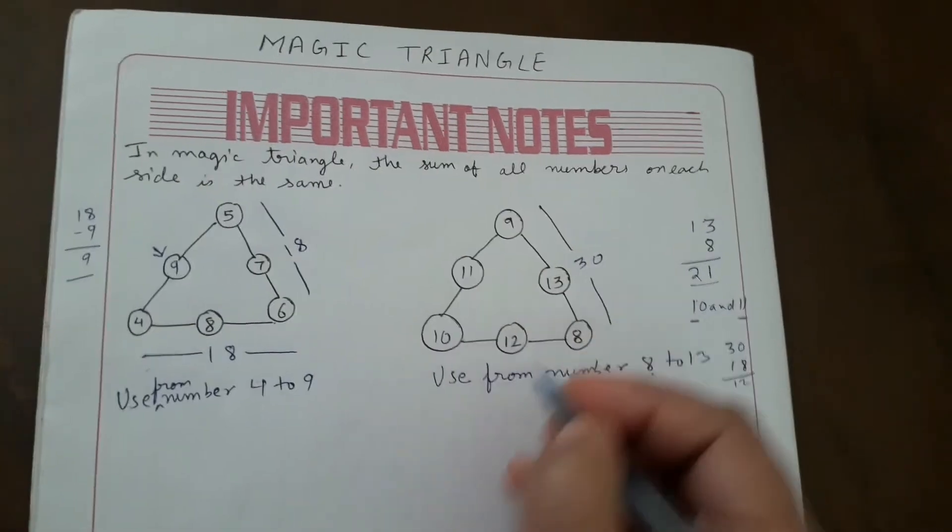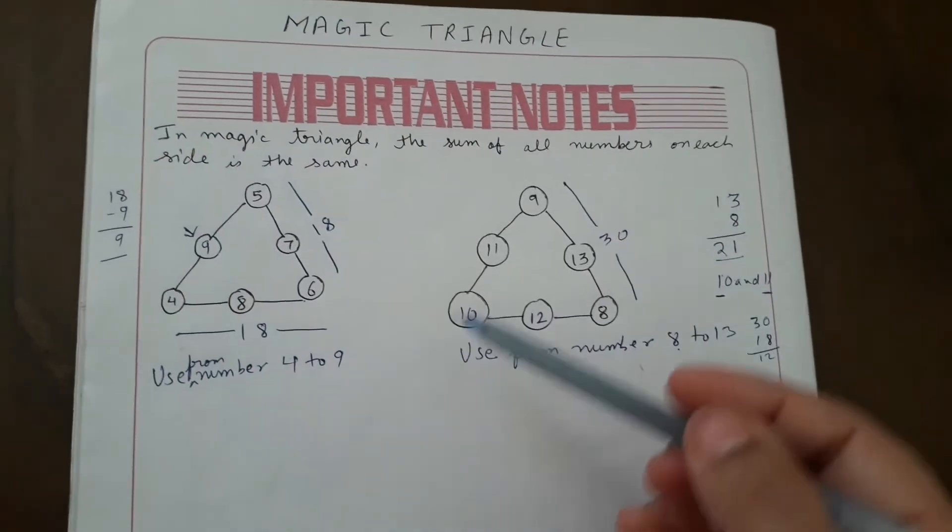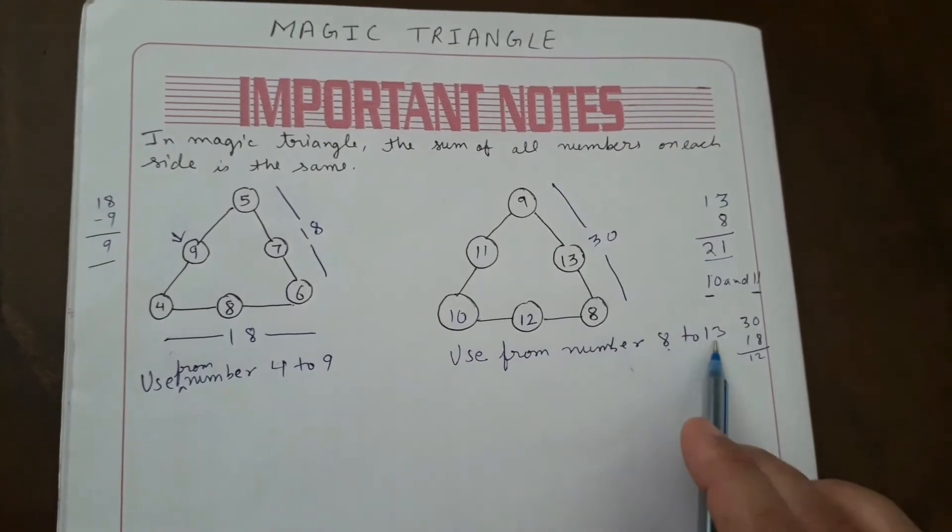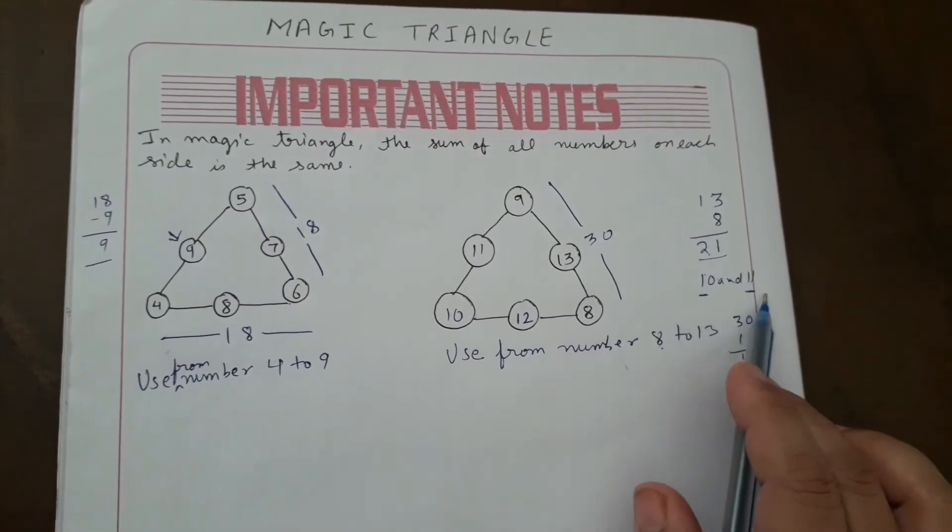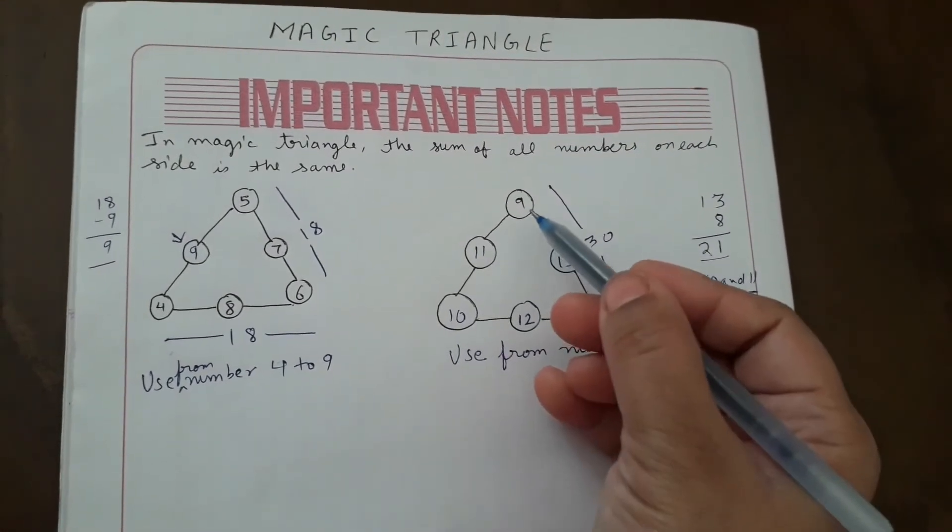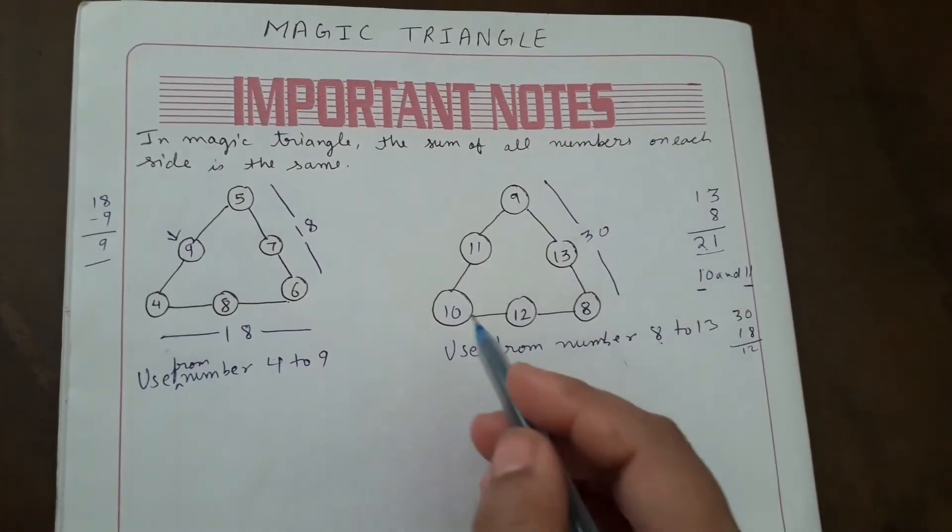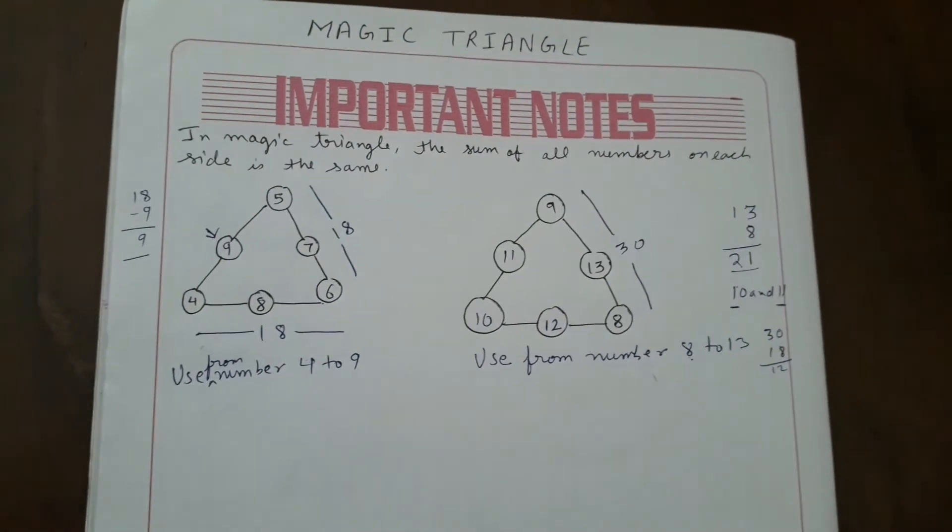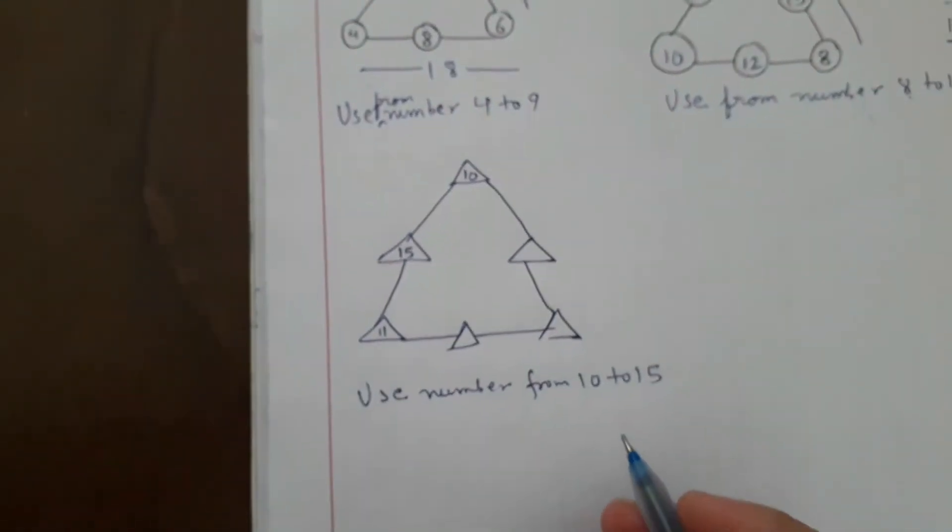Then this way you can solve any magic triangle. You have to fill it with two numbers and then check if you have to fill the next number, you can subtract to find the next number.